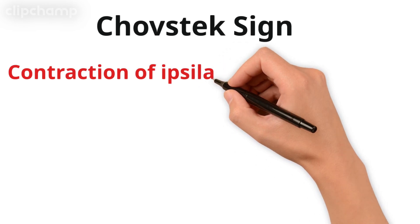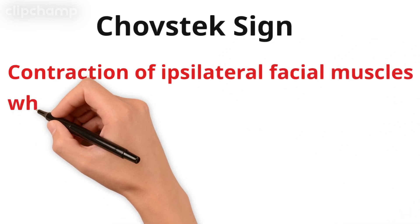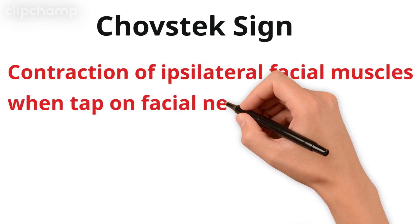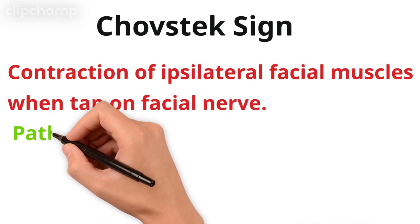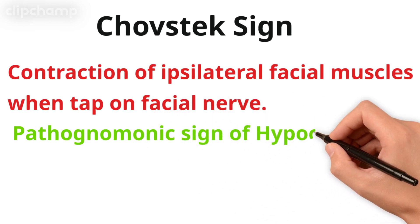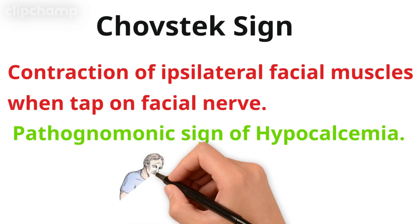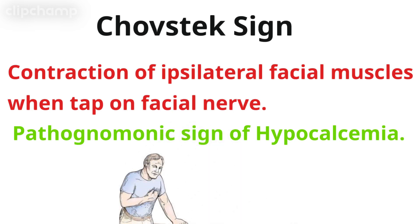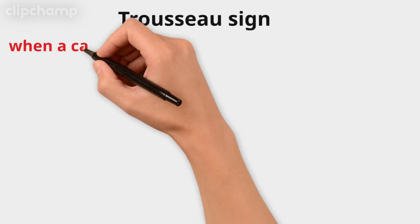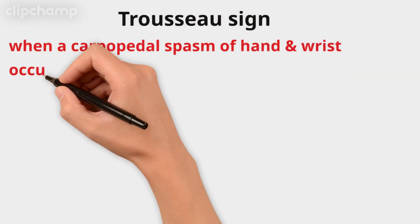Next is Chvostek's sign. It is actually the contraction of ipsilateral facial muscles when we tap on the facial nerve area. This confirms the diagnosis of hypocalcemia. This is Chvostek's sign.